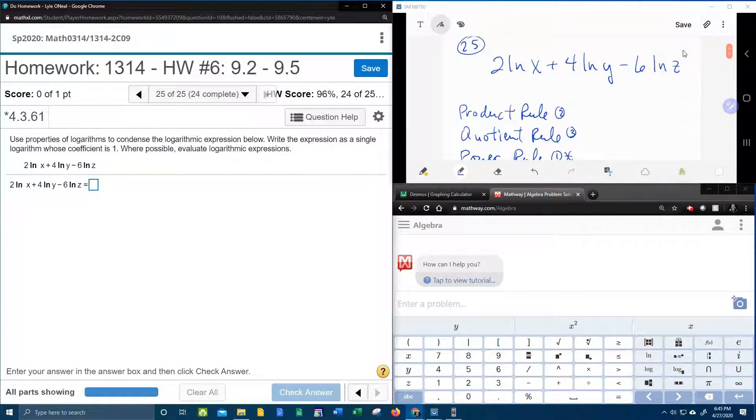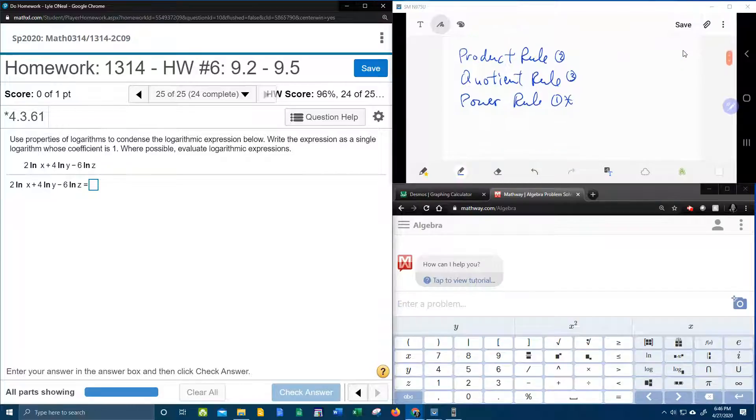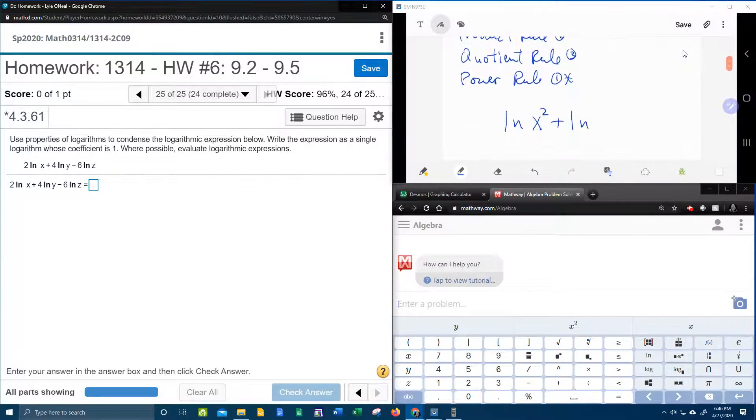So each one of these coefficients of the logarithm is going to turn back into an exponent of the variable. That's the power rule in effect. So what we're going to have is the natural log of x squared, plus the natural log of y to the fourth, minus the natural log of z to the sixth.